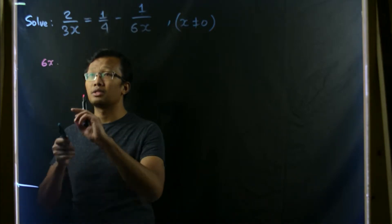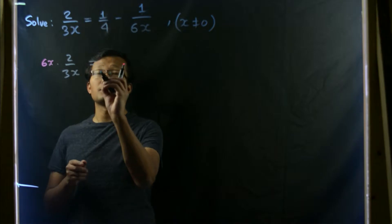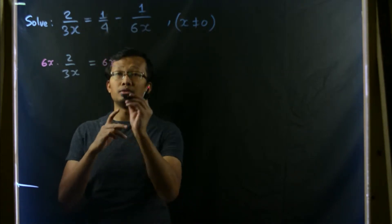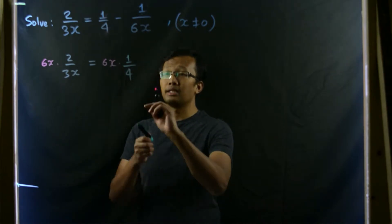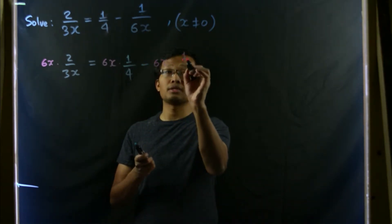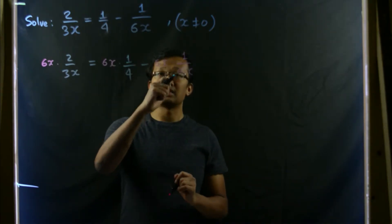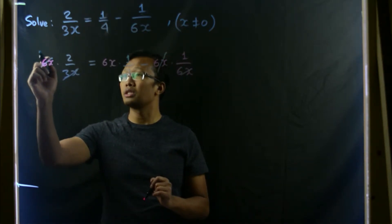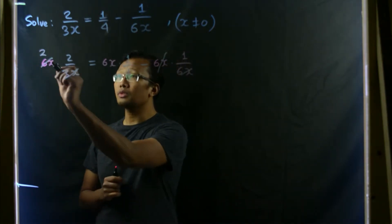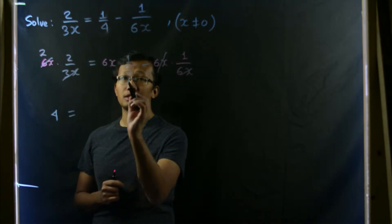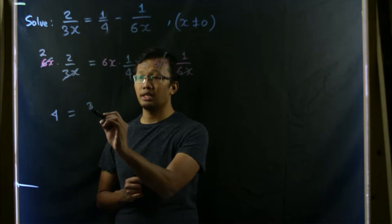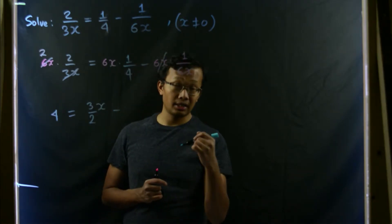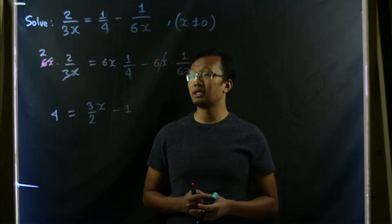So if I do 6x times 2/(3x) equals 1/4 will also be multiplied by 6x. So let me multiply this 6x with 1/4 minus 6x times 1/(6x). Then you can clearly see the 6x and 6x cancels out. And 3x, x and x is cancelled out. 3 times 2 is 6. So we'll be getting 4 equals 3x/2 minus 1. We have removed x from the denominator.